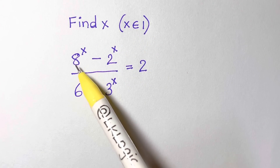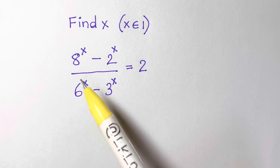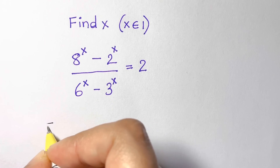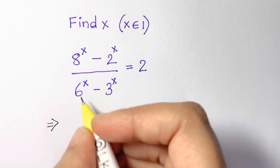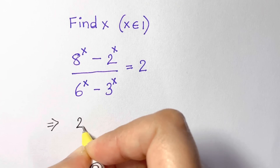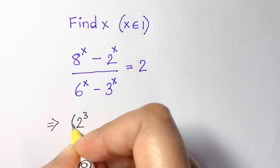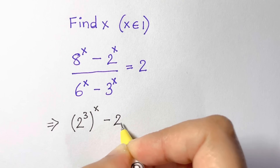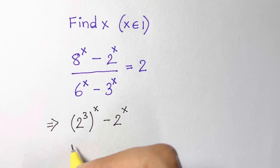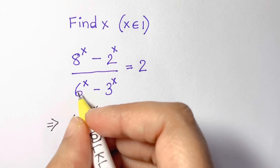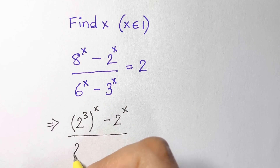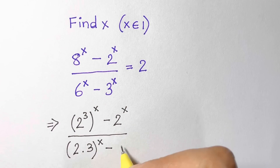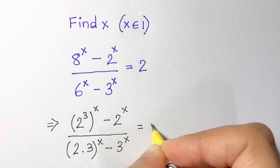First we are going to turn 8 into the base of 2, since 2 cubed is 8. So we write: 2 cubed, whole to the power of x, minus 2 to the power of x, over 6 written as 2 times 3, so 2 times 3 whole to the power of x, minus 3 to the power of x, equals 2.